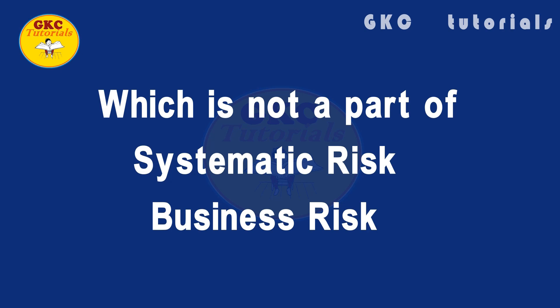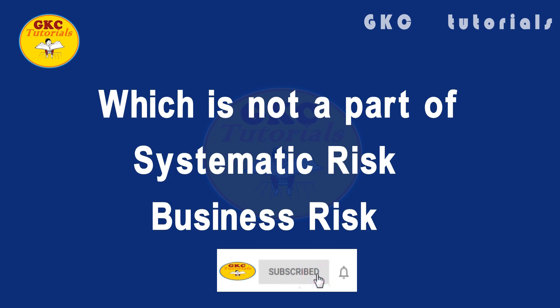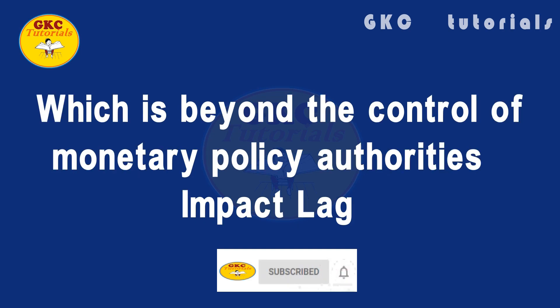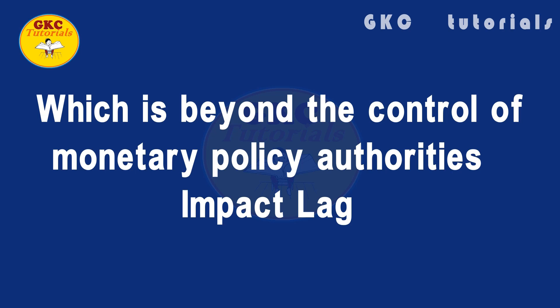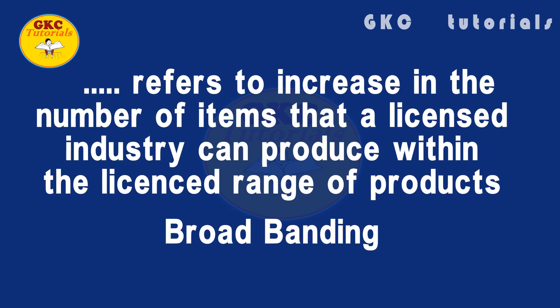Next question: which is not a part of systematic risk? The answer is business risk. Next question: which is beyond the control of monetary policy authorities? The answer is external impact. Next question: what refers to the increase in the number of items that a licensed industry can produce within the licensed range of products? The answer is broad banding.